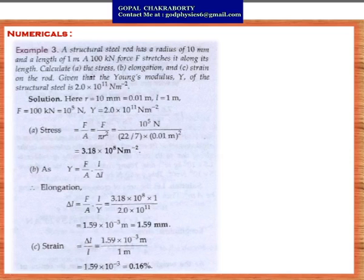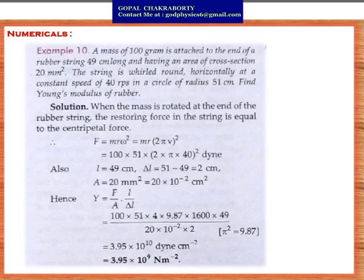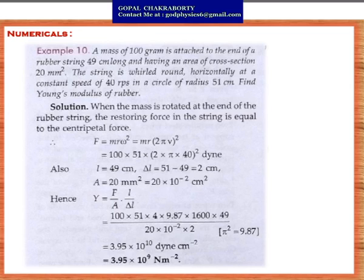Numerical Problem 4: A mass of 100 g is attached to the end of a rubber string 49 cm long with cross-sectional area 20 mm². The string is whirled horizontally at constant speed of 40 rps in a circle of radius 51 cm. Find Young's modulus of the rubber. Using centripetal force: F = mrω² = mr(2πν)², substituting values: F = 100 × 51 × (2π × 40)². Given ΔL = 51 - 49 = 2 cm, A = 20 × 10⁻² cm². Substituting all values gives Y = 3.95 × 10⁹ N/m².